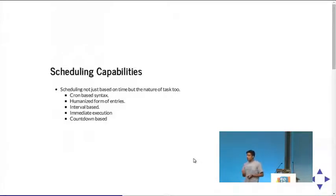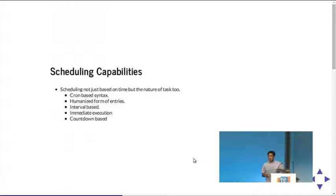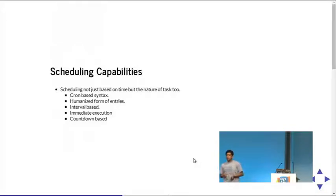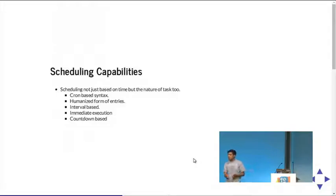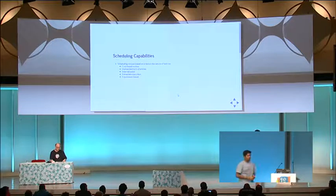You can do a humanized form of entry — execute this query every Monday. You can set interval-based events: execute every 15 seconds or every 30 seconds. Celery also lets you do a countdown approach — fire this query after 10 seconds, then it counts down and fires the task. This comes in handy for cleanup jobs: after firing one task, I know 90 seconds later I want to fire another task. We'll talk more about that in the workflow section.